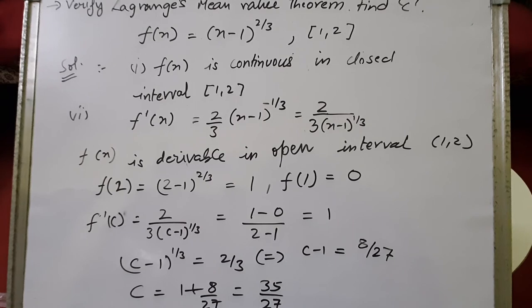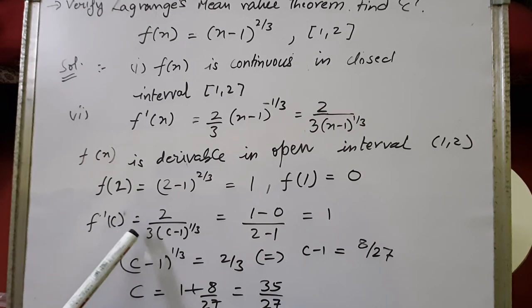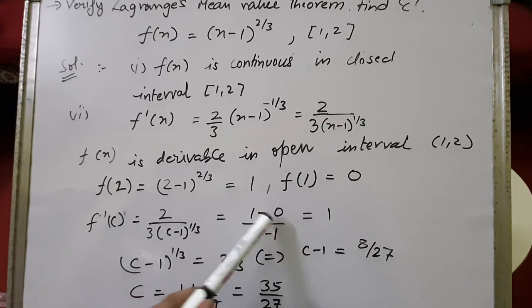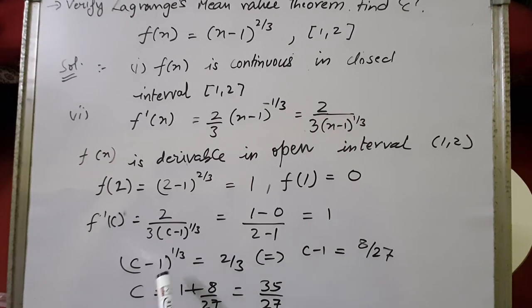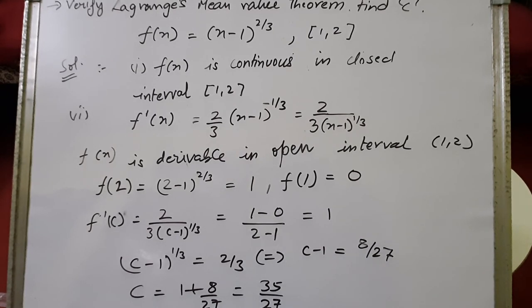Finding c: f(2) = (2-1)^(2/3) = 1^(2/3) = 1. f(1) = (1-1)^(2/3) = 0. Setting f'(c) = [f(2) - f(1)] / (2 - 1): 2 / [3(c - 1)^(1/3)] = (1 - 0)/1 = 1. Cross-multiplying: (c - 1)^(1/3) = 2/3. Cubing both sides: c - 1 = 8/27. Therefore c = 1 + 8/27 = 35/27.